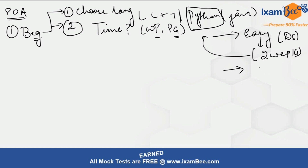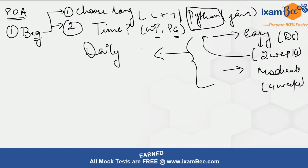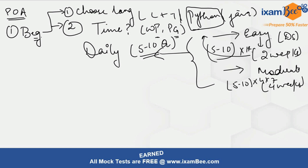Once you are done with the easy level, you have to upgrade yourself to the moderate level, which will require a minimum of four weeks. This is given that you practice at least five to ten questions daily. If you can't do that, it will take longer. So two weeks for easy plus four weeks for moderate — practicing five to ten questions per day — gives you a minimum of six weeks total.